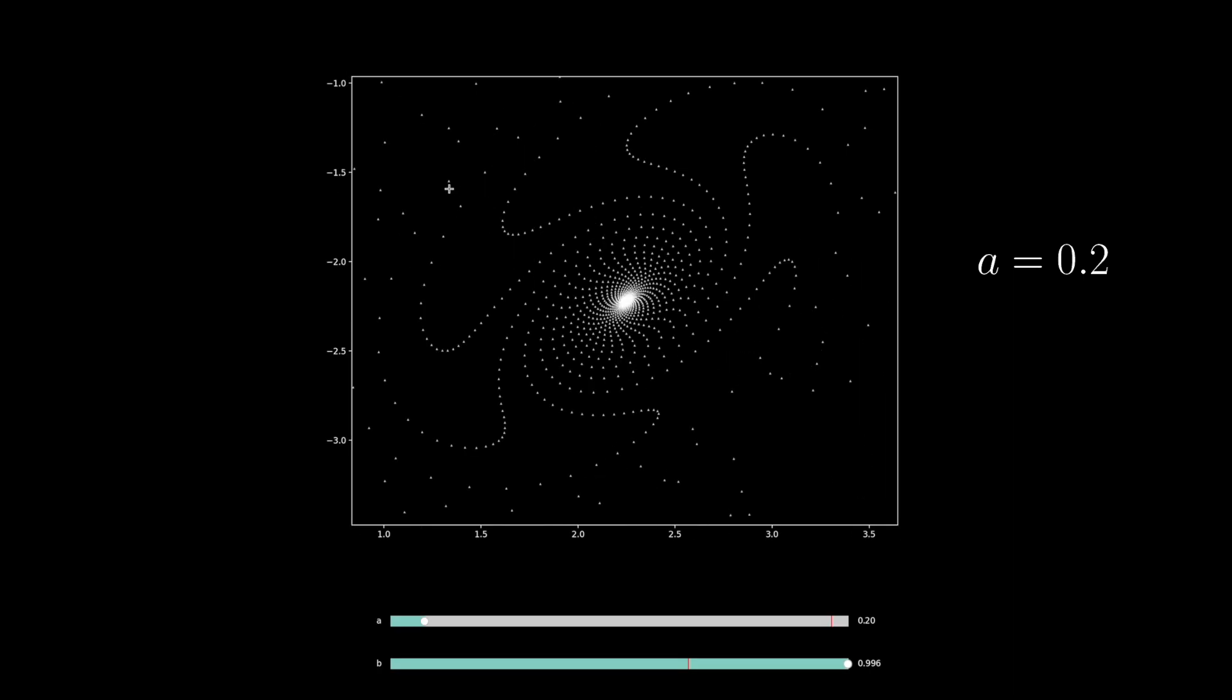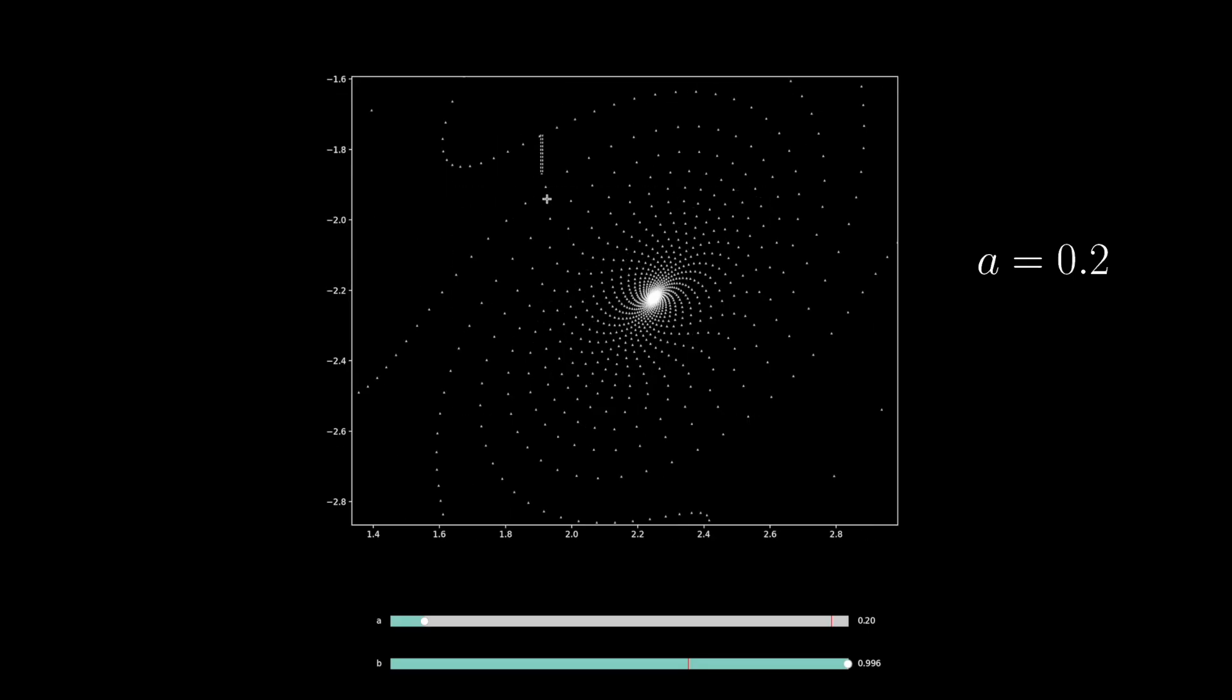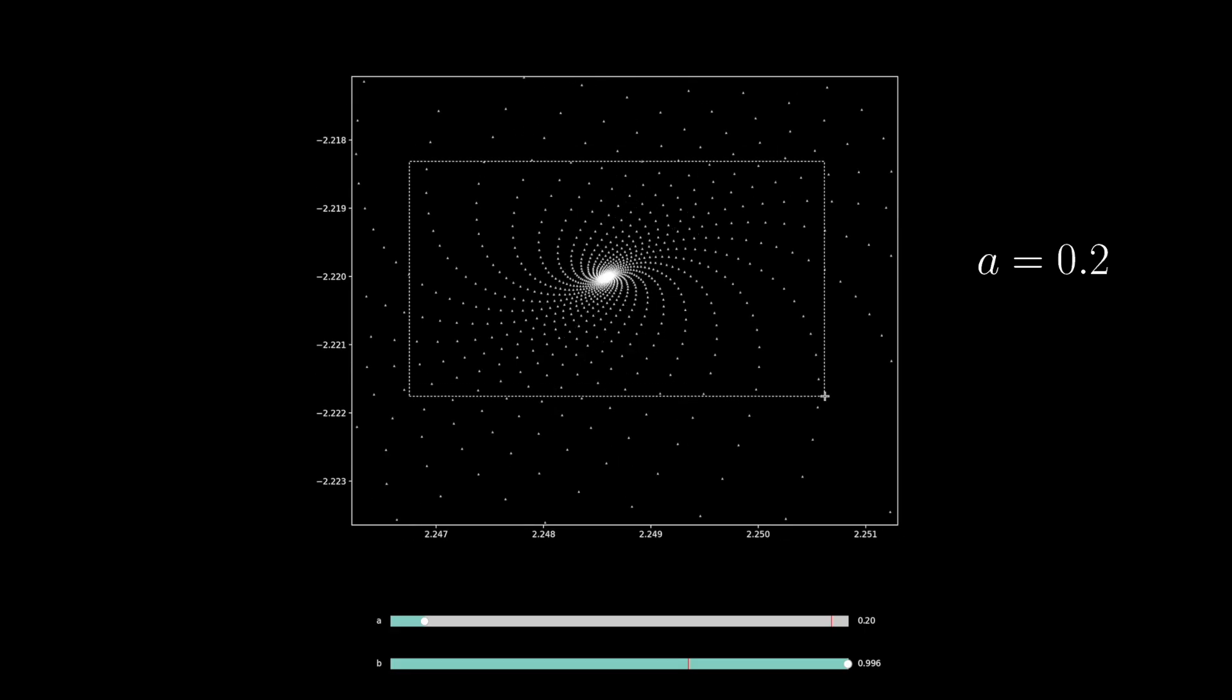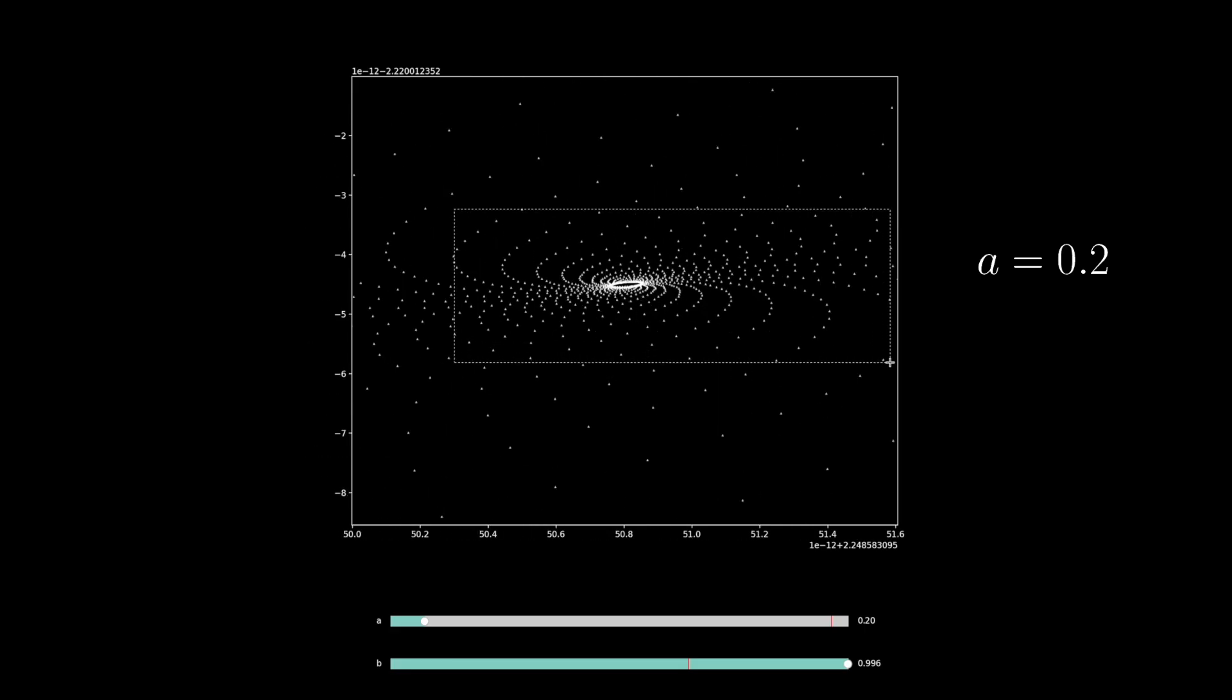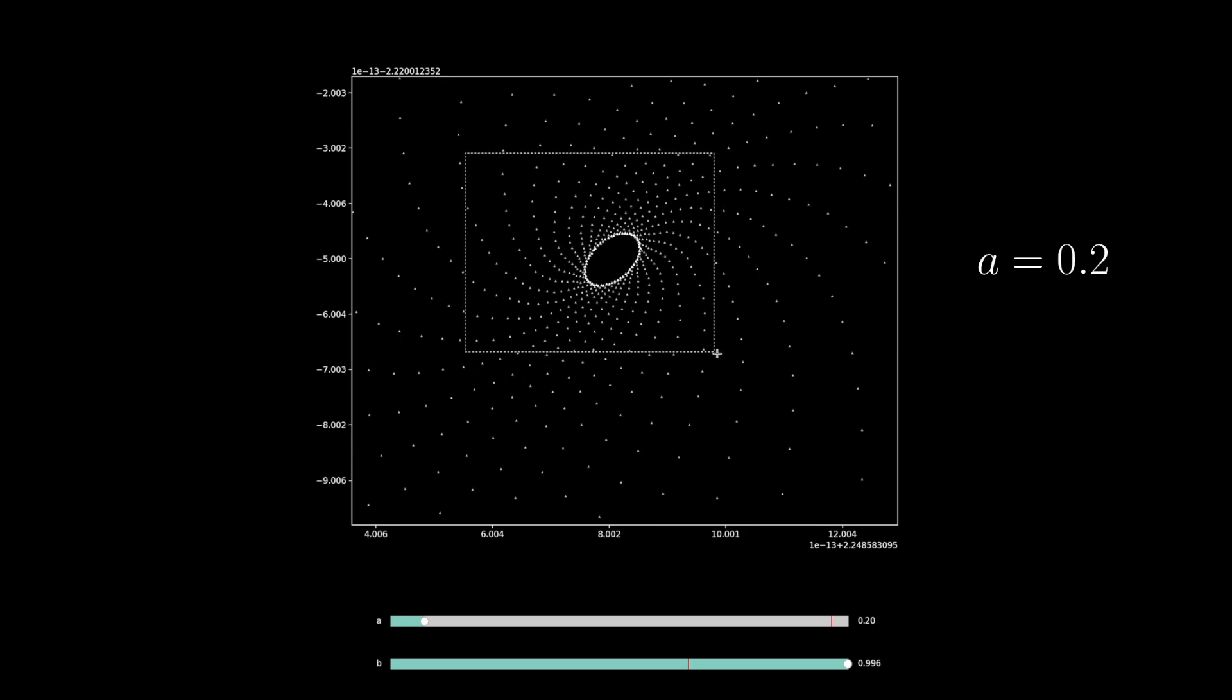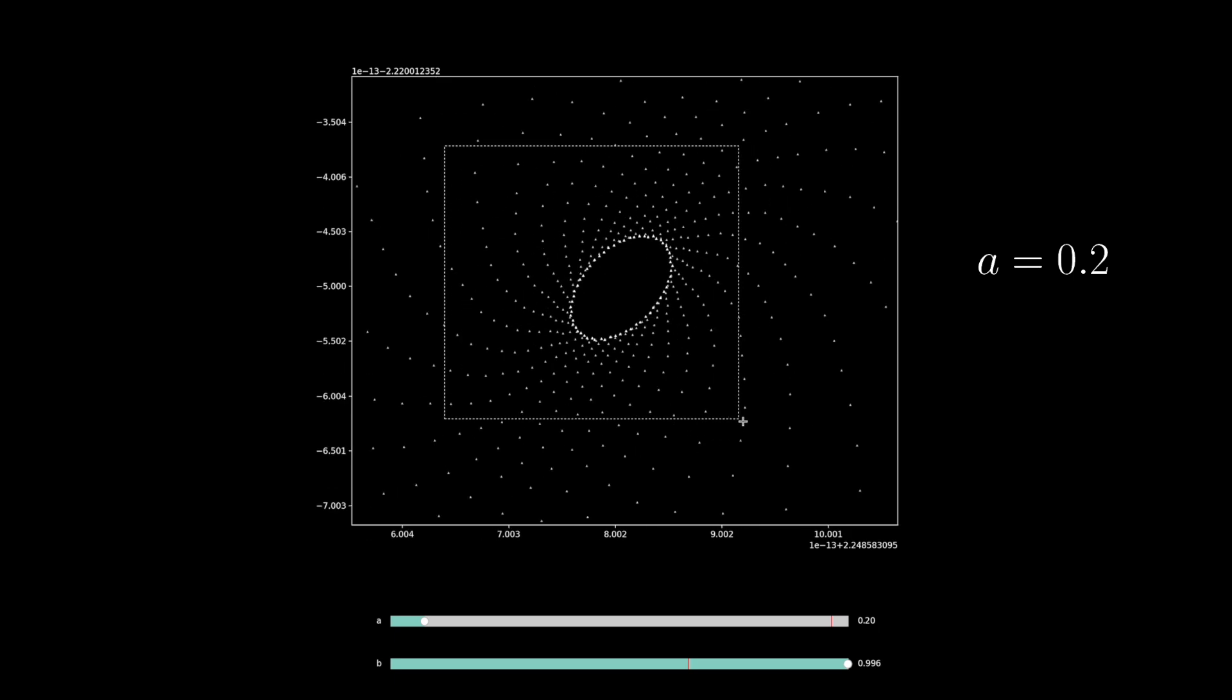Once again, we see the self-similar spiral pattern. Keep zooming towards the center. And once again, we find a ring of points representing a cycle. Or rather, a bigger cycle with two very distant areas of convergence.